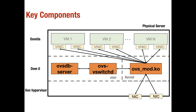The other module is called ovs-vswitchd, which is the most critical component of this setup. It does three sets of communication: it communicates with the kernel module to push rules that have to be applied in kernel space; it interacts with OpenFlow to understand what OpenFlow rules have to be applied in the data plane; and it maintains the switch state in the OVSDB server.